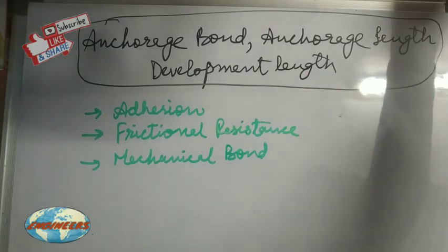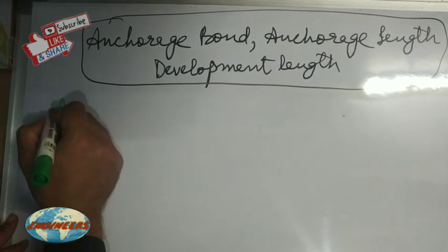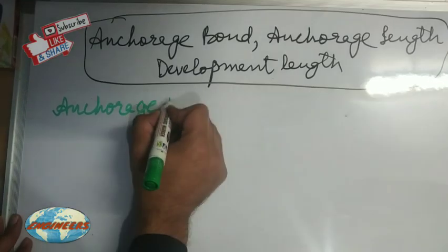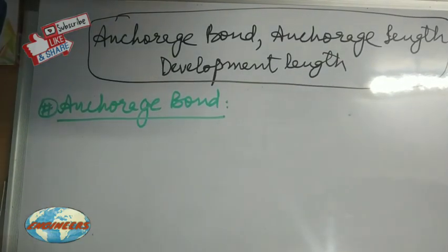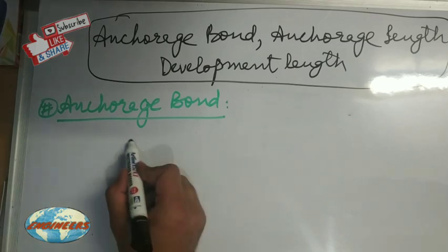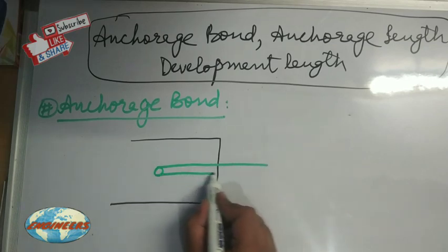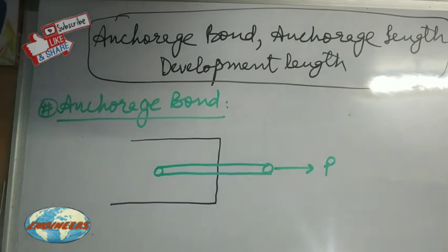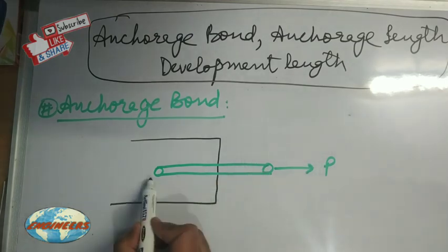We will start with Anchorage Bond. First of all, we must know what is bond stress. Bond stress is developed when any force is applied over the steel to get it removed from the concrete surface. Whenever a tensile force is acting over a reinforcement — for example, this is the concrete section and this is the reinforcement — and here it is acted upon by a tensile force P, the bond stress acts over the full length of the reinforcement embedded in the concrete.